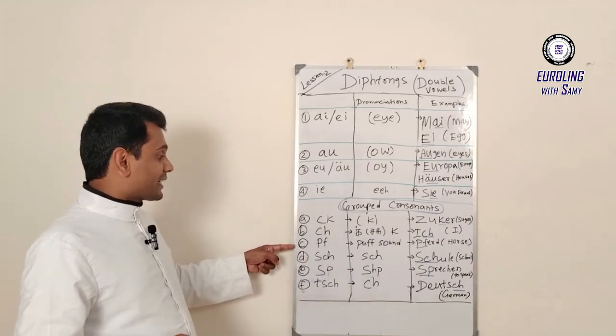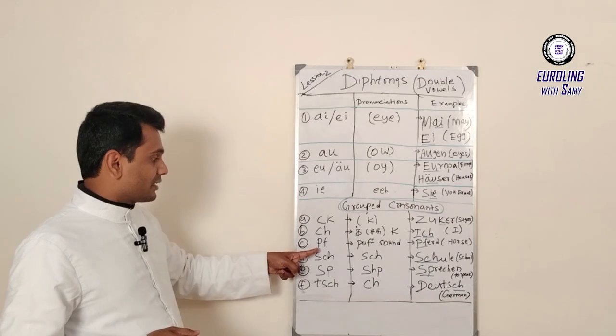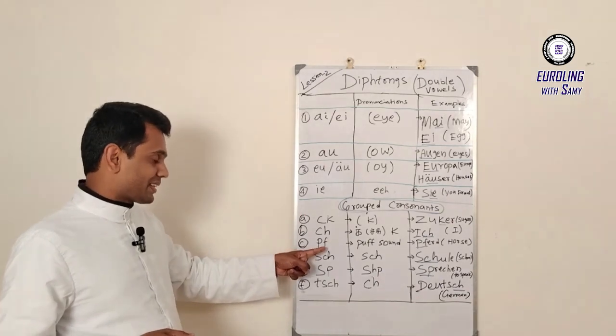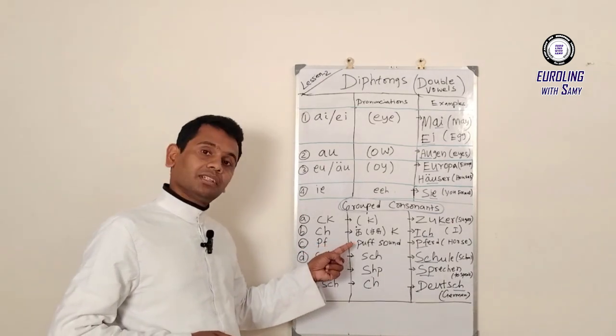There are a few other examples for grouped consonants. That is PF, like a puff sound, kind of puff sound.